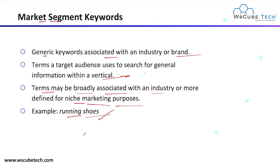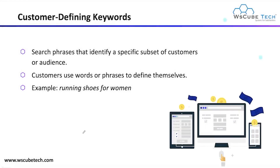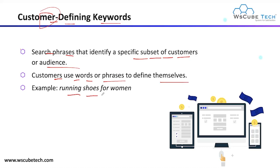In your particular niche, any kind of keyword which your audiences are targeting, you can use here. Next we have customer defining keywords. As the name shows, these completely focus on the customer — search phrases that identify a specific subset of customers or audiences. Customers use a word or phrase to define themselves. Example: 'running shoes for women' — here 'women' is your customer, and this type of keyword is known as a customer defining keyword.